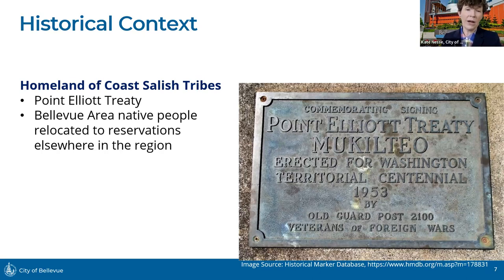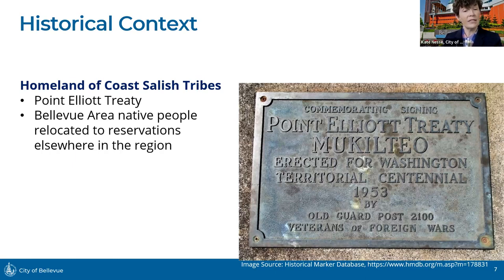In terms of historical context, going back to the European era of this area, there was a lot of activity to push the people who were already here out of the area so that newcomers — Europeans — could do mining, farming, and other activities. There were a series of treaties signed between the nascent government and Native people — probably the most well known is the Point Elliott Treaty — which pushed Indigenous people into ever smaller areas elsewhere in the region so that newcomers could use the resources here.